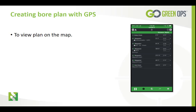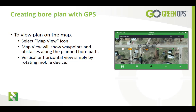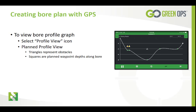To view your plan on a map, select the map view icon. The map will show waypoints and obstacles along the planned bore path. The map may be viewed vertically or horizontally simply by rotating the mobile device. To view the bore profile graph, select the profile view icon. The planned profile view can also be viewed horizontally or vertically. The horizontal view will be less skewed due to the horizontal compression of the graph. The triangle in the profile view represents different obstacles, while the green squares are the planned waypoint depths along the bore.